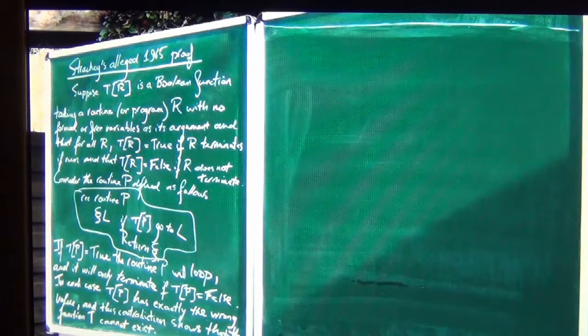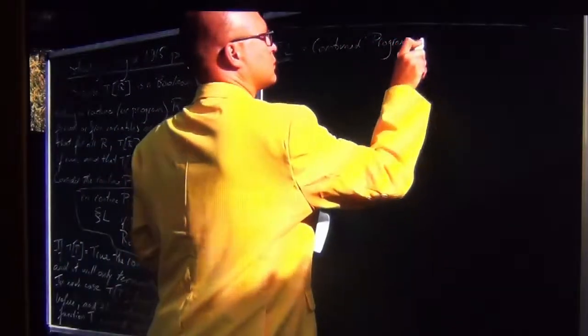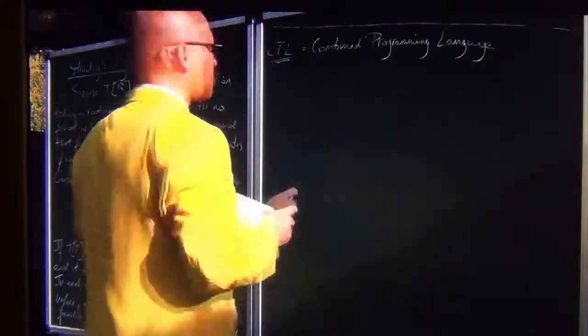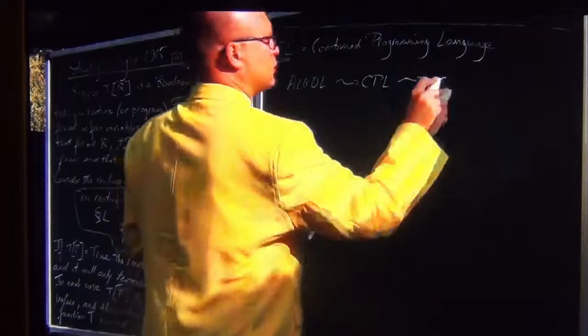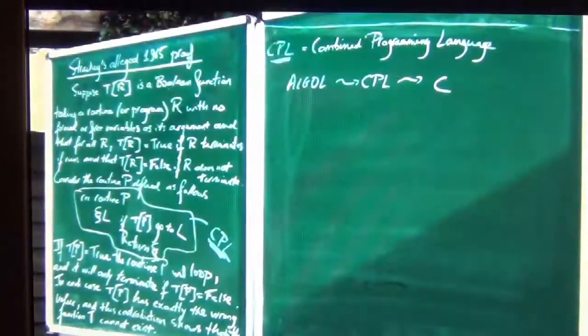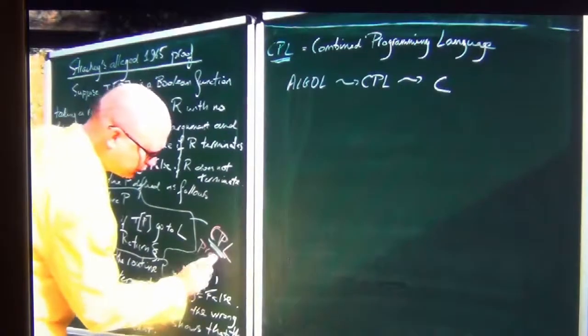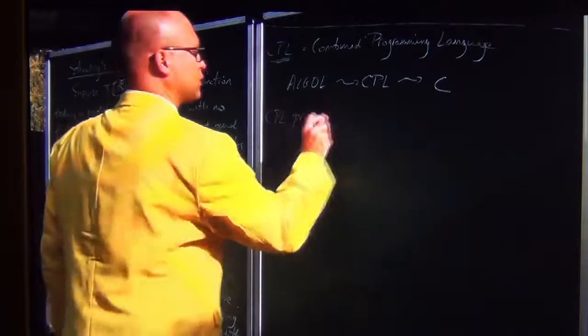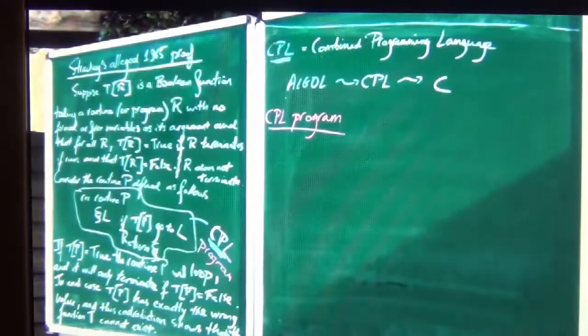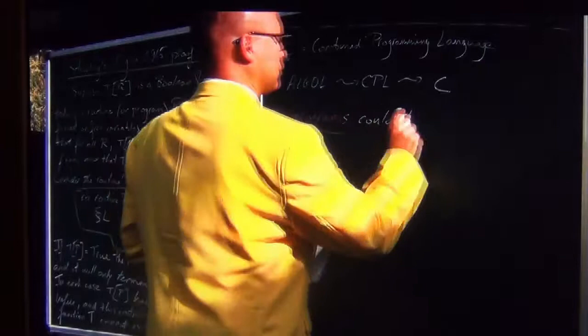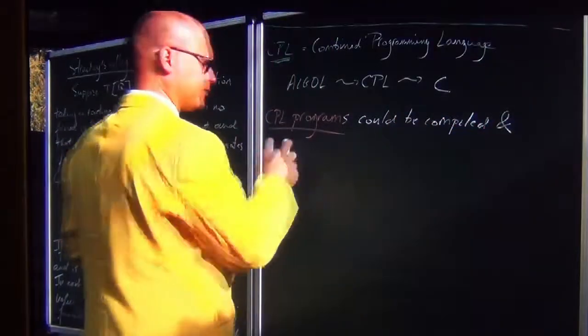That's just on one slide. Strachey's complete argument was written in CPL, the combined programming language. It was inspired by the ALGOL language and was a predecessor to the C programming language. What Strachey did was provide a CPL code fragment.